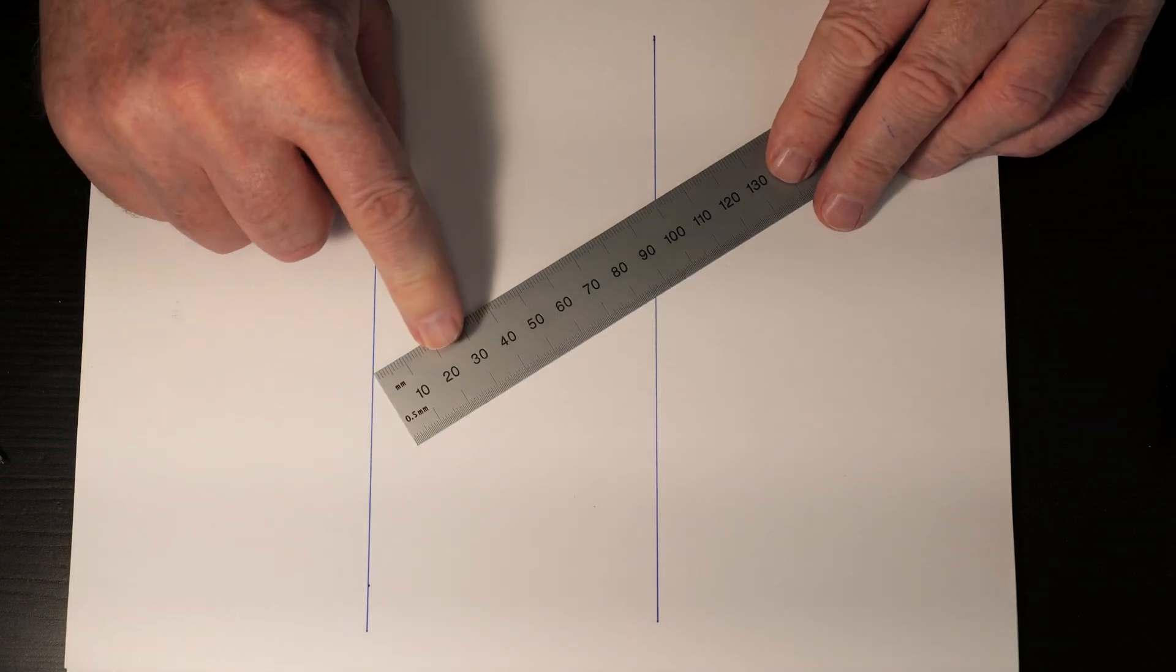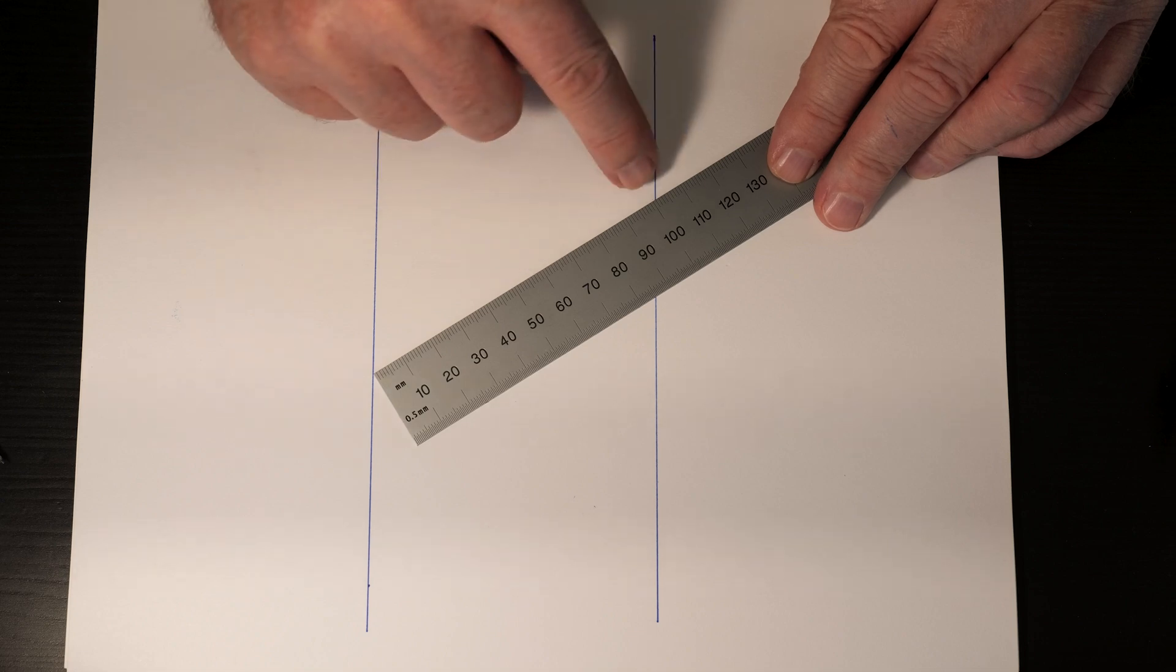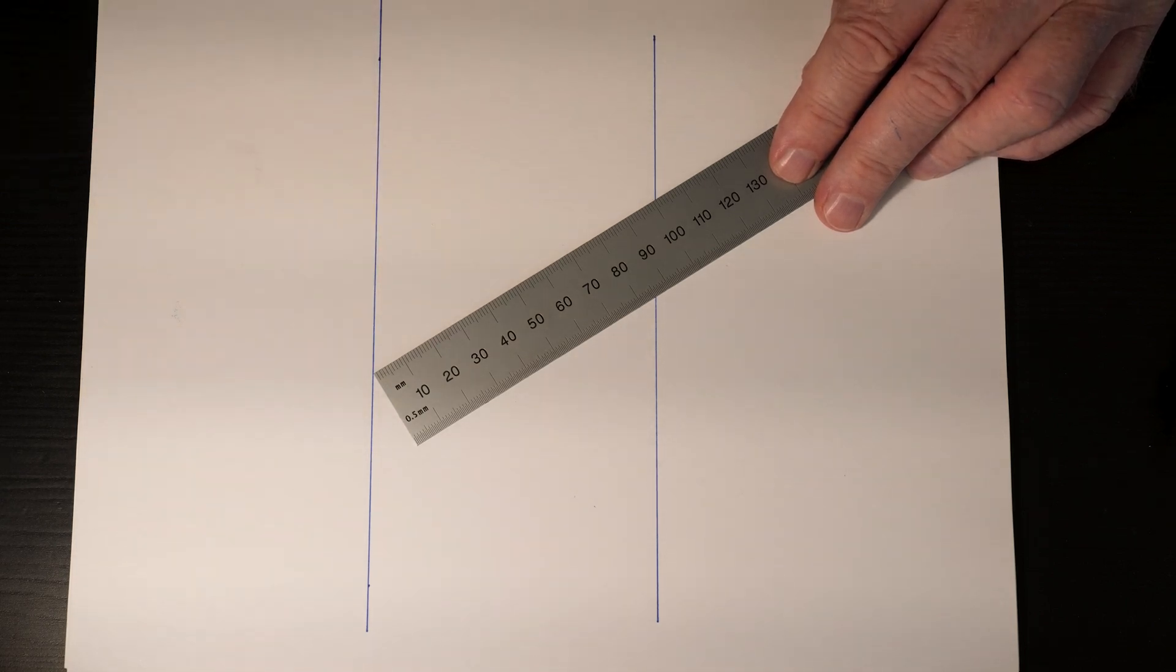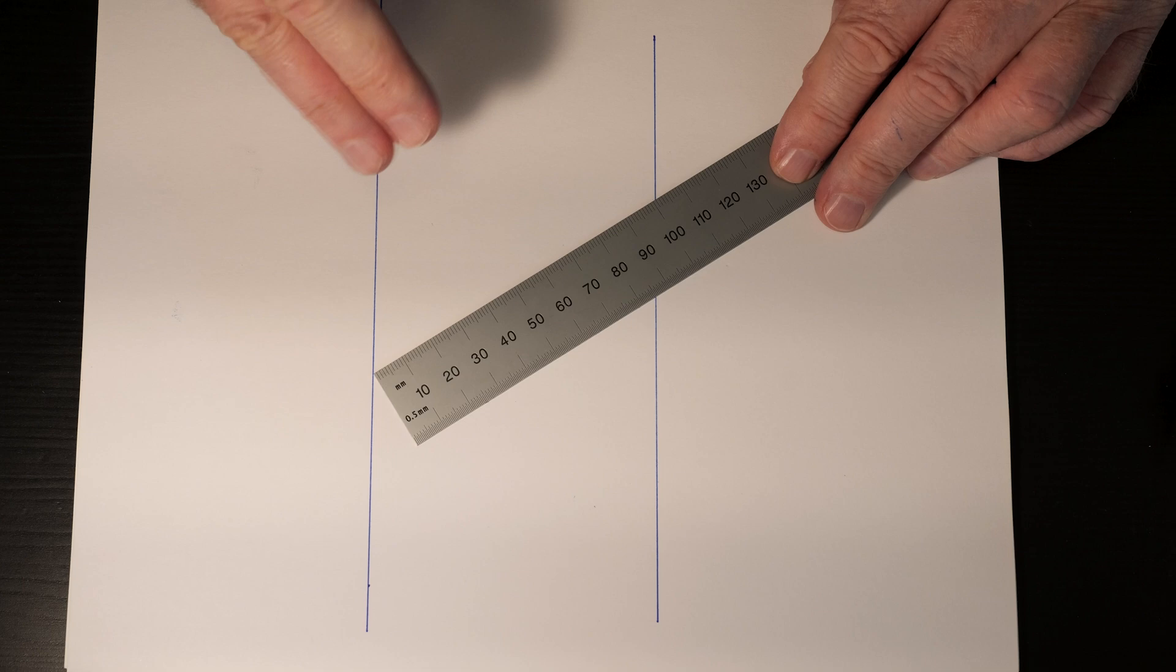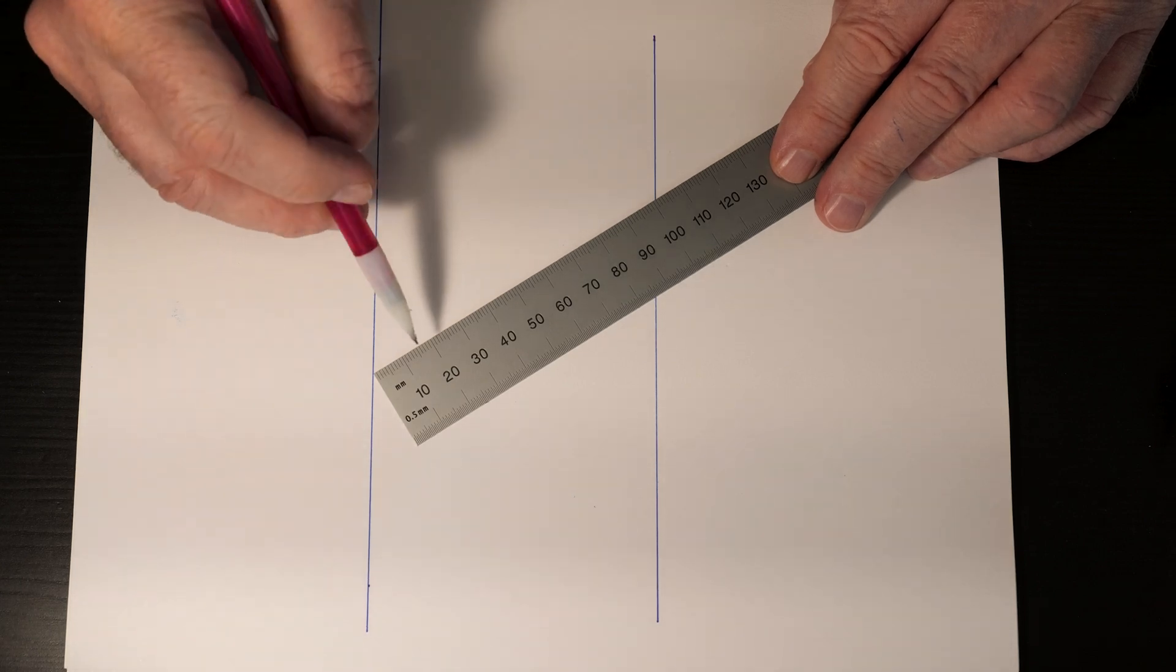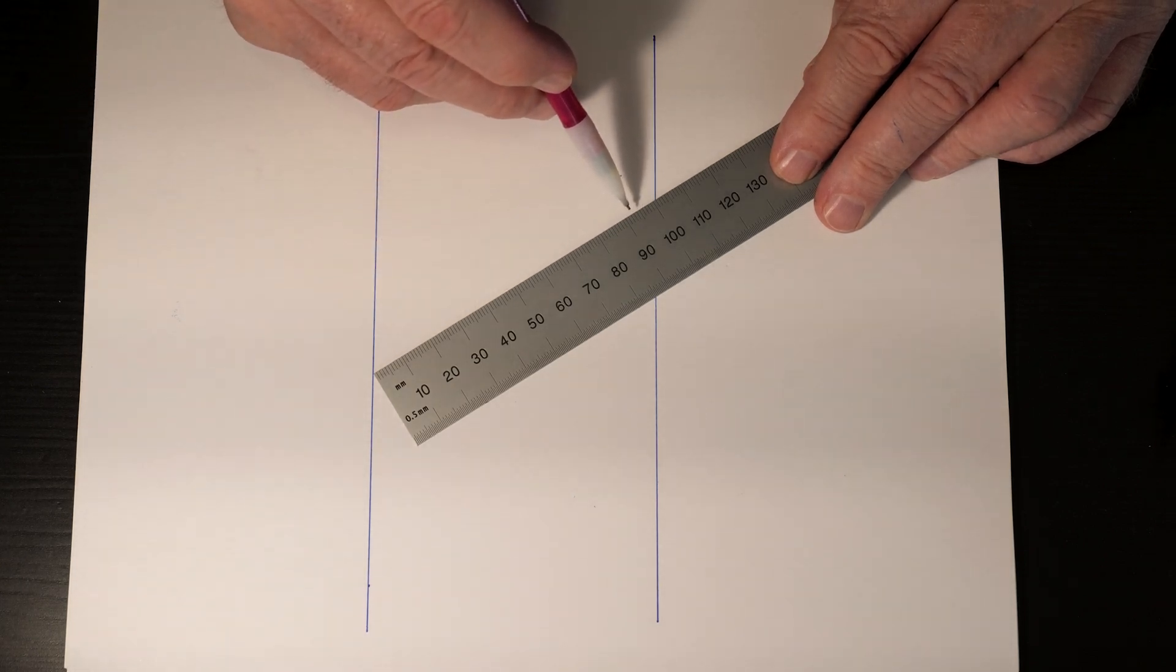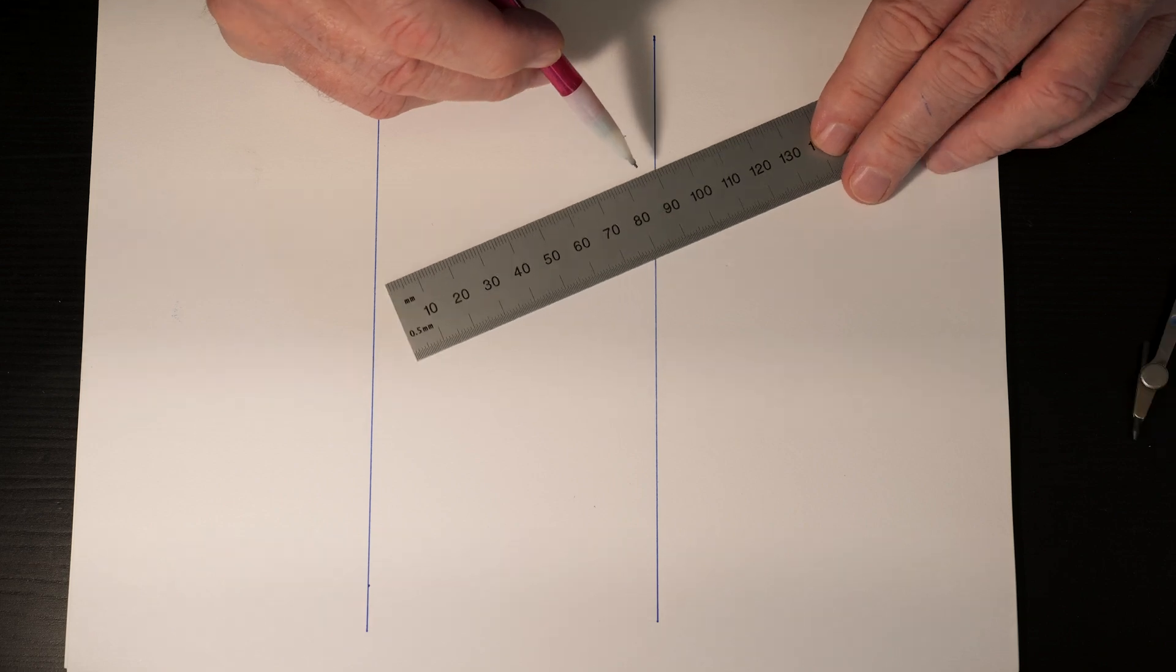I'm taking my ruler and in this case I'm using the metric side simply because I don't want to deal with fractions. But since I want to divide this into three equal components, I want to pick a number here that's divisible by three. In this case it's 90.